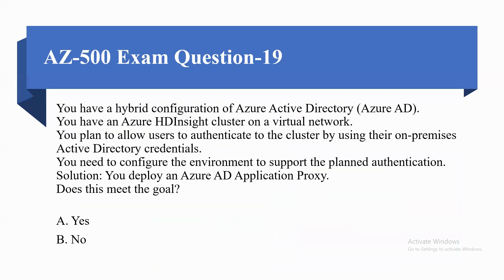Coming to the next question. You have a hybrid configuration of Azure Active Directory. You have an Azure HDInsight cluster on a virtual network. You plan to allow users to authenticate to the cluster by using their on-premises Active Directory credentials. The solution provided is to deploy an Azure AD Application Proxy. Does this solution meet the goal? The correct answer is No.